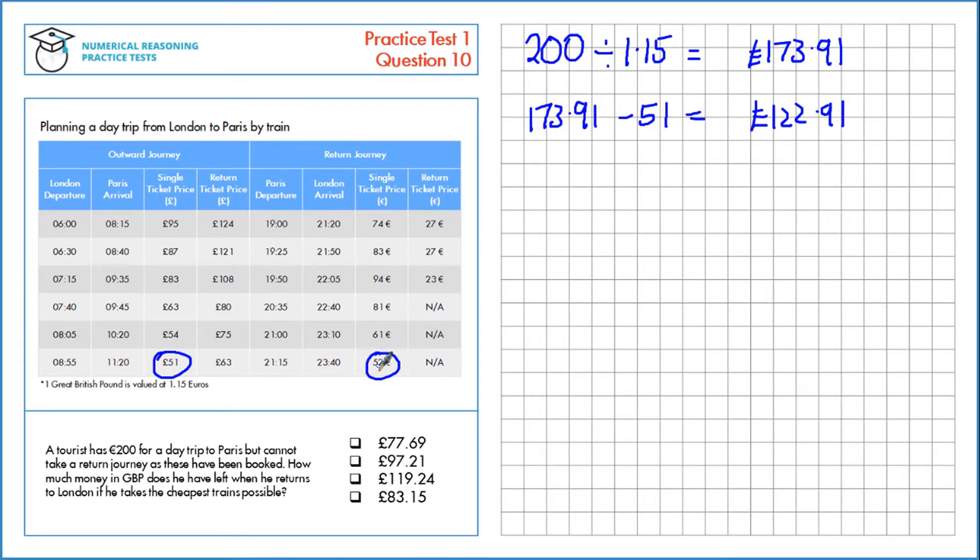We then want to take away the return journey, however that's in euros at the moment, so we need to convert that. 52 euros divided by 1.15 is £45.22.